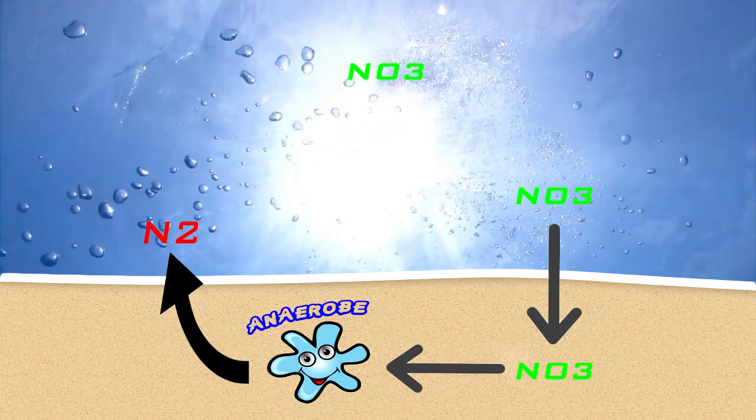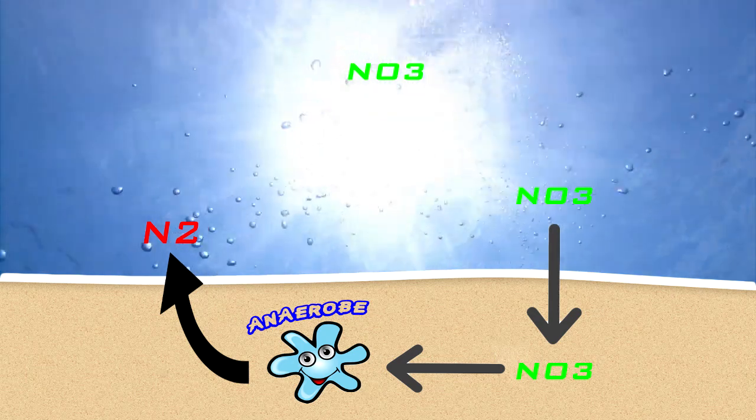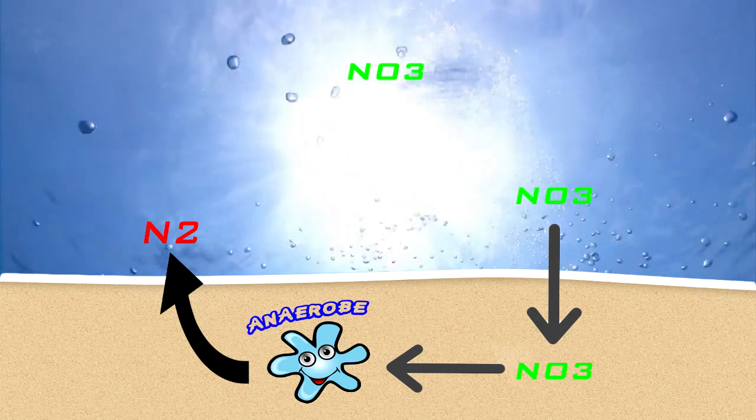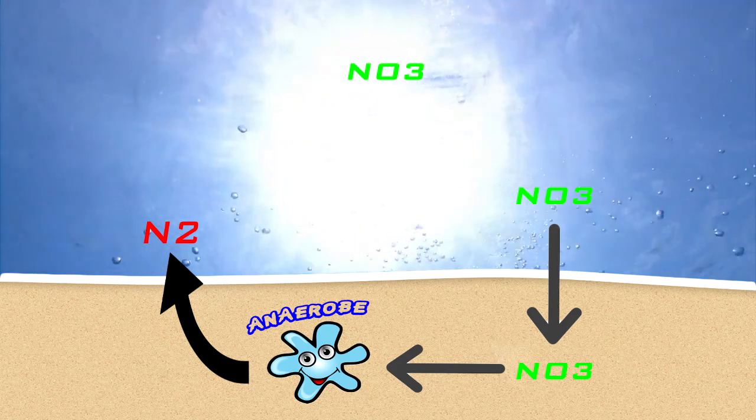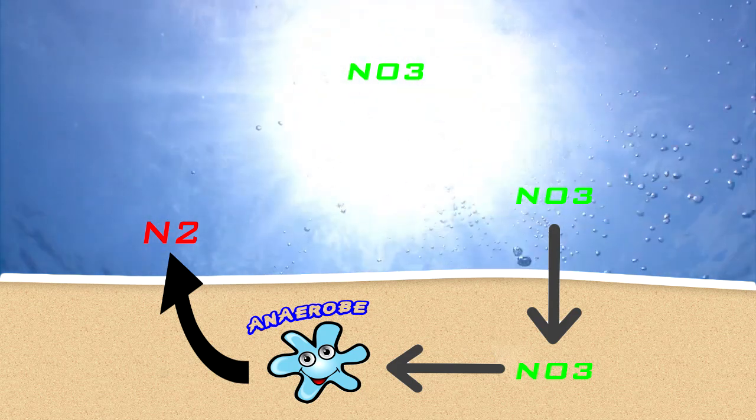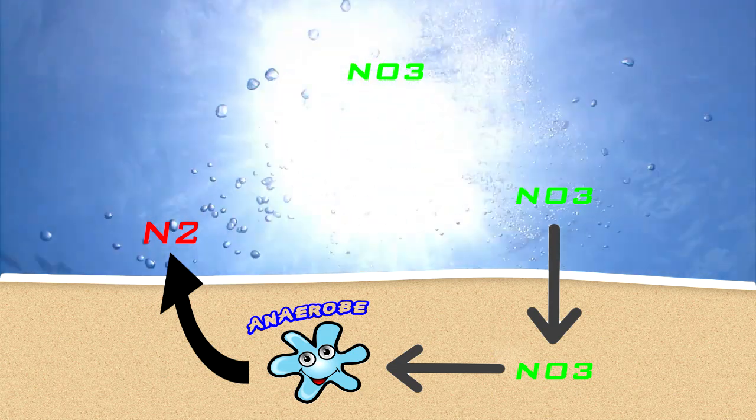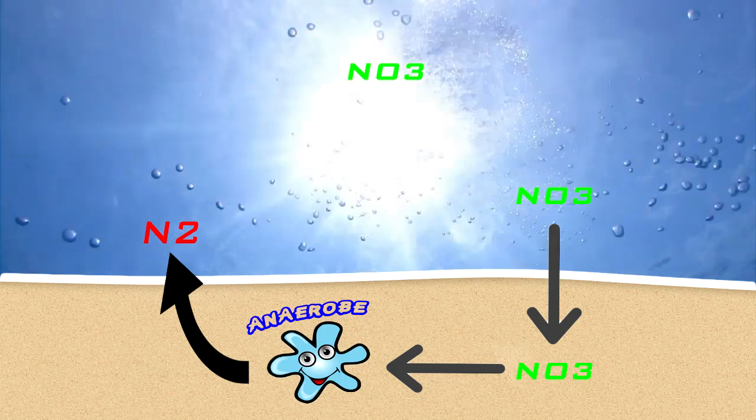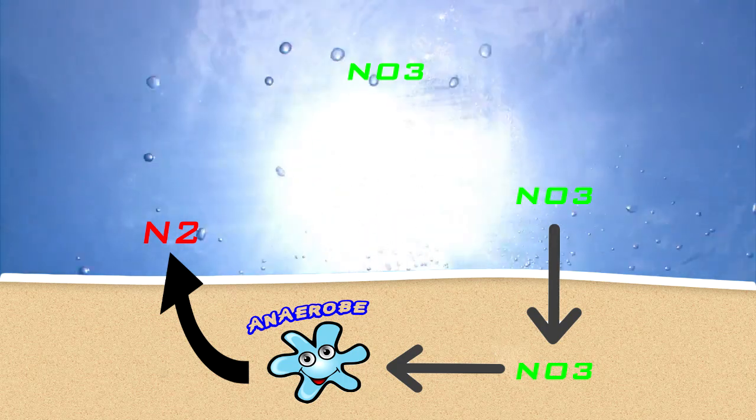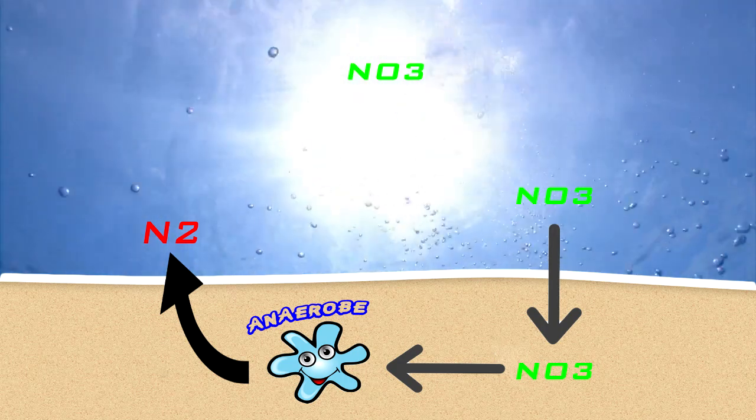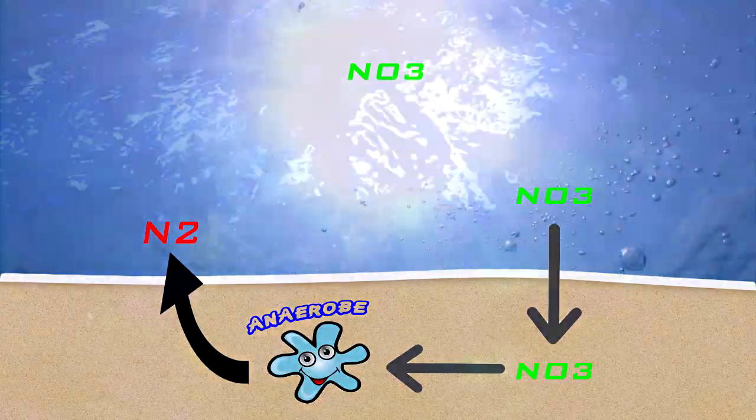If you have any anaerobic areas such as a deep sand bed, this is an area that's completely depleted of oxygen. In this area, anaerobic bacteria can completely consume nitrates and turn it into nitrogen gas. That nitrogen gas can then float up to the top of your water and escape through the top and out into the air by gas transfer.